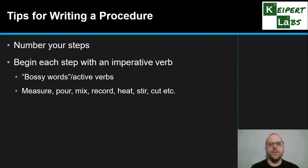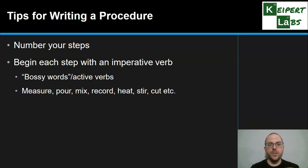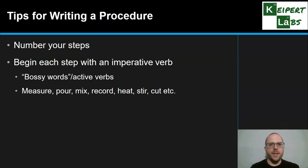Begin each step with an imperative verb — what you might call an active verb or a bossy word. Examples include: measure, pour, mix, record, heat, stir, cut. It tells the reader what action they are doing. It might also include relevant adverbs to help them in how to carry it out: carefully pour, slowly mix, quickly add. These kinds of adverbs add detail to the instructions to help the person know exactly how to do it.